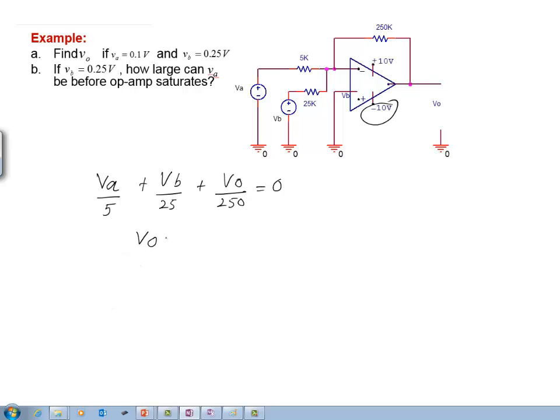Solving for V sub 0, we get a negative of 250 over 5 times V A plus 250 over 25 times V sub B.